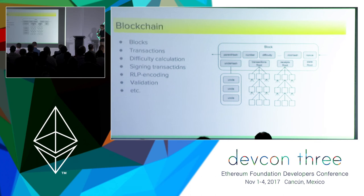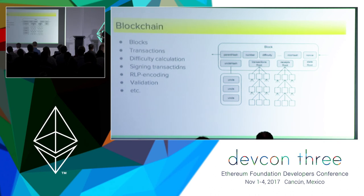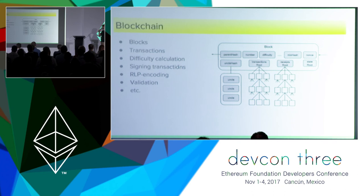The blockchain component is the first consensus-critical component specified directly by the yellow paper. It implements the rules around data structures like the block and the transaction — for example, rules for constructing a block, filling its fields, calculating difficulty, rules about signing transactions with an account's private key, and rules about encoding all of this in RLP format. This part is not so complicated, though it may seem so; it is precisely specified and all a developer needs to do is carefully follow the specification.